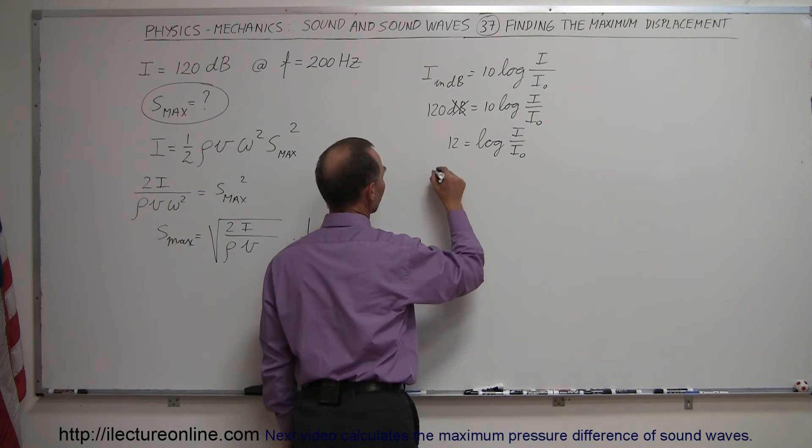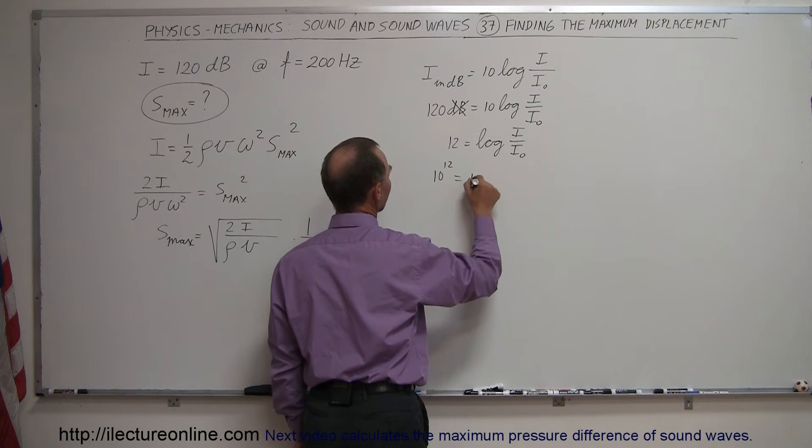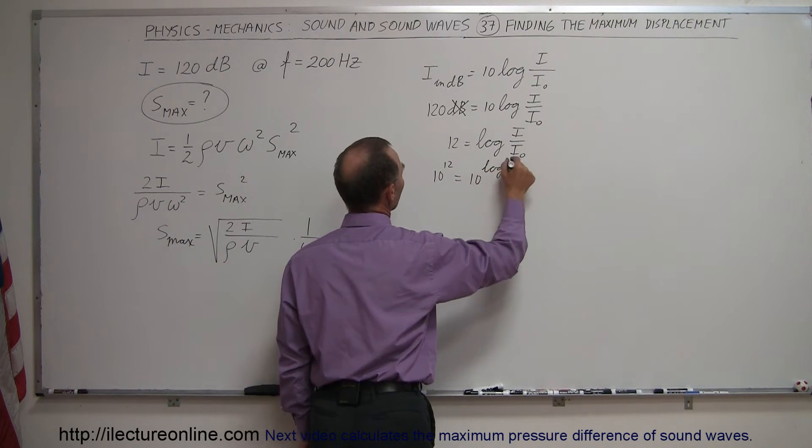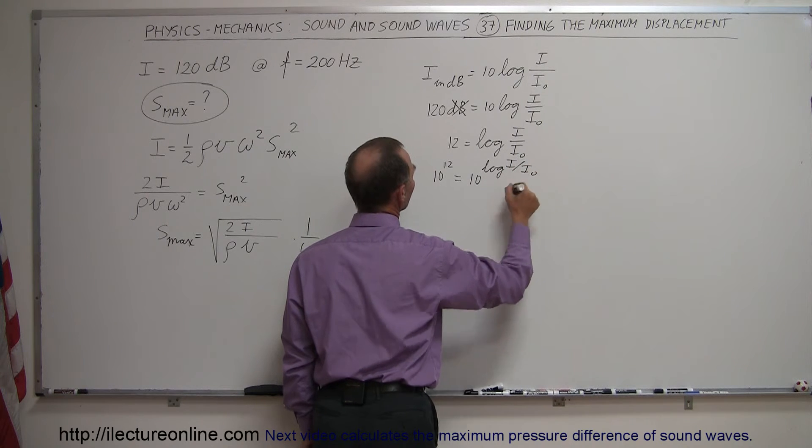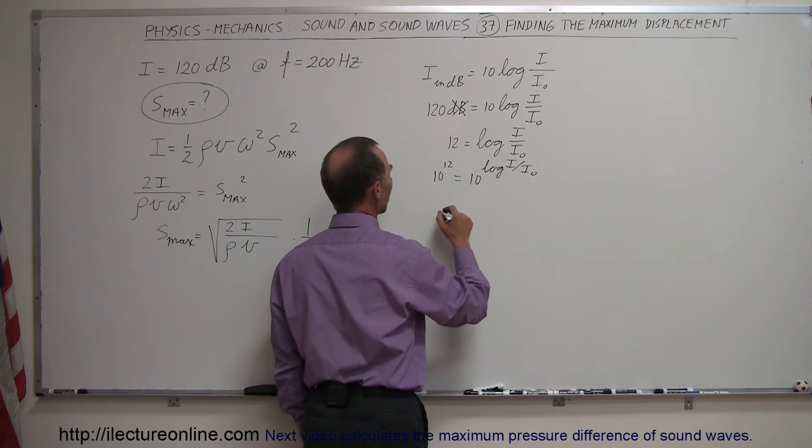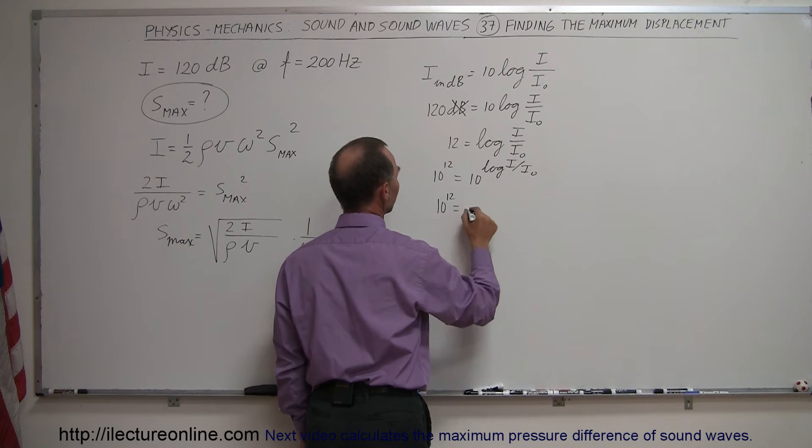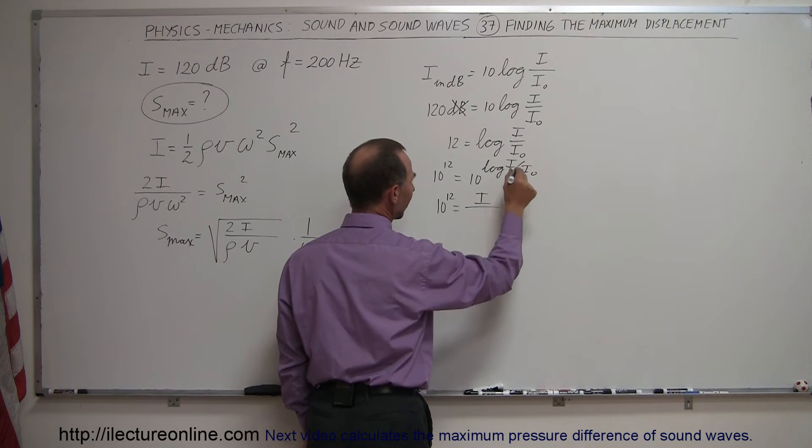Now we take the antilog of that, so 10 to the 12th is equal to 10 to the log of I over I_0. That negates the log, so 10 to the 12th is equal to I divided by I_0.